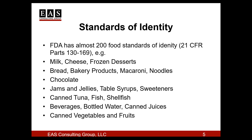Sometimes standards of identity can be revised or revoked. FDA recently revoked the standard of identity of artificially sweetened jams and jellies because of the impact of Section 130.10, which allows a standardized food with a nutrient content claim to have formulation changes made to accommodate that claim. In other situations, FDA can decide the time has come to revoke a standard just because it's outdated and no longer needed.